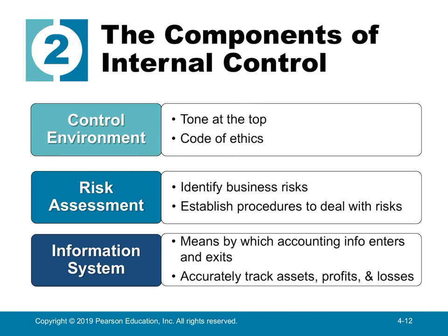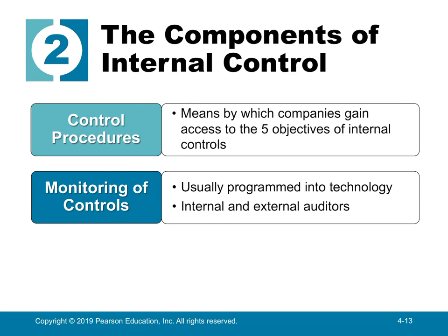Describing those components: the control environment is the code of ethics and tone at the top. Risk assessment identifies business risks and establishes procedures that deal with those specific risks — there's no one internal control that makes sense across all companies. The information system is critical because this is how accounting information enters and exits; everything is now done in computer systems. Monitoring is most often done through technology and by internal and external auditors.